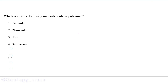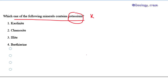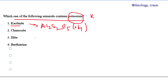The next question: which one of the following minerals contains potassium? The first option is kaolinite, whose chemical formula is Al₂Si₂O₅(OH)₄. It is a clay mineral. Questions related to clay minerals come often in this kind of exam, so try to read that topic properly.